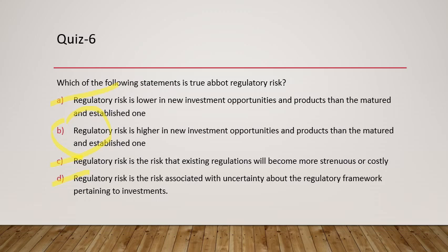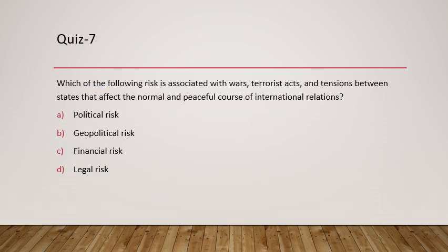Question 7: Which of the following risks is associated with war, terrorist acts, and tensions between states that affect the normal and peaceful course of international relations? It is called geopolitical risk — not political risk — because it is between countries and involves war, terrorist acts, and tensions.